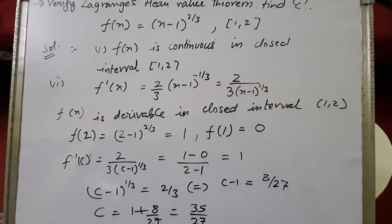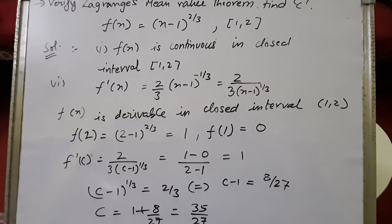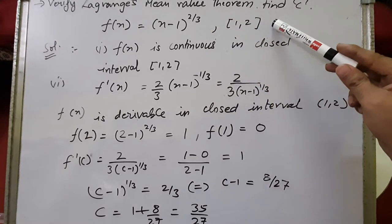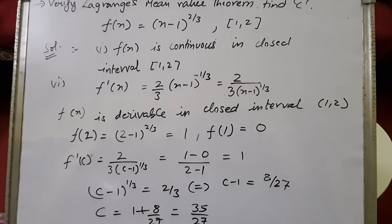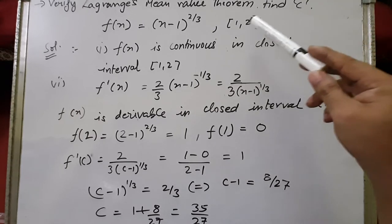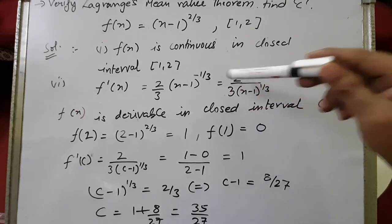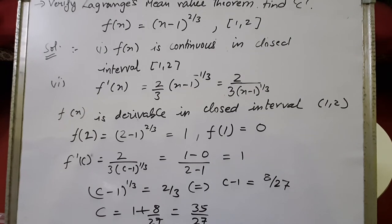Let's see another example from the exercise. Verify the Lagrange Mean Value Theorem and find c for f(x) = (x - 1)^(2/3) on the closed interval [1, 2]. First condition: at x = 1 the function equals 0, at x = 2 it equals 1, and between 1 and 2 all points are defined. There is no point at which the function is undefined, so f(x) is continuous in the closed interval [1, 2].